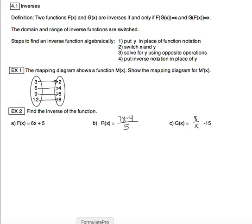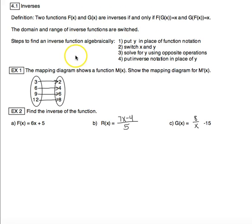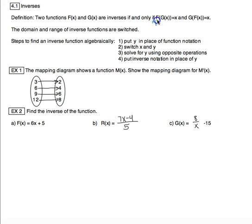We are now moving toward different types of functions. We've been focusing on quadratics for a while and now we are going to look at inverse functions. I've got the definition up here because they will definitely ask you at least one question about this definition on the quiz. The definition for inverses is: two functions — you can name them anything, I picked g of x and f of x — but two functions are inverses if and only if f of g of x...